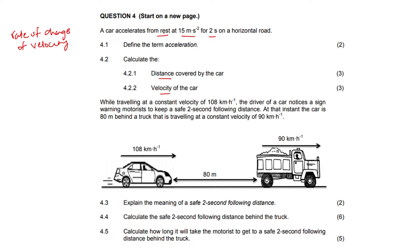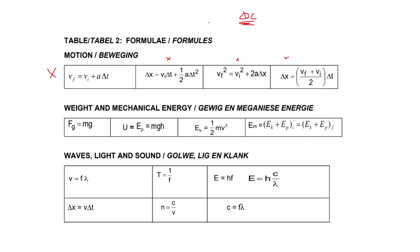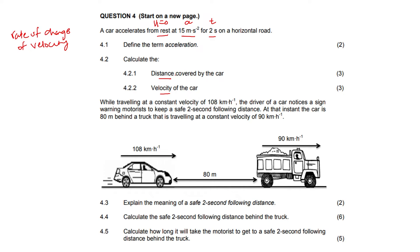A car accelerates from rest — what does that mean? It means it starts at zero, so initial velocity is zero. The acceleration is 15 meters per second squared and the time is 2 seconds. We have initial velocity, acceleration, and time. The second formula has initial velocity, time, and acceleration, and the only thing missing is distance — so that is the most suitable formula to use.